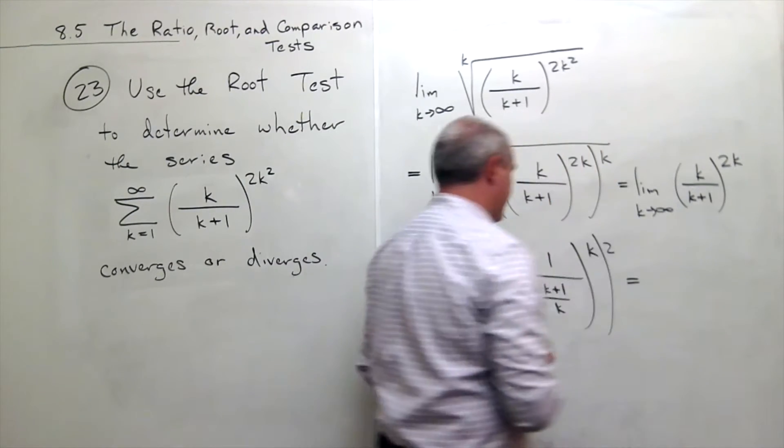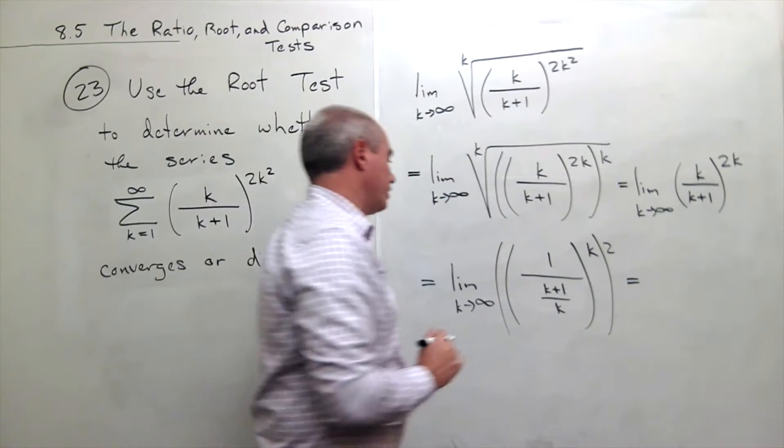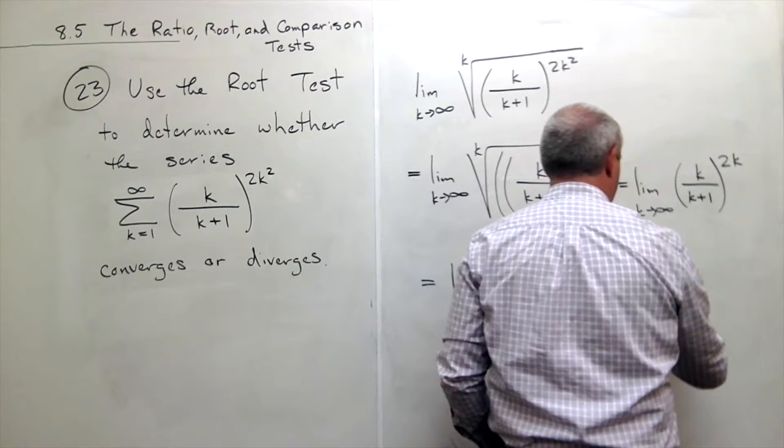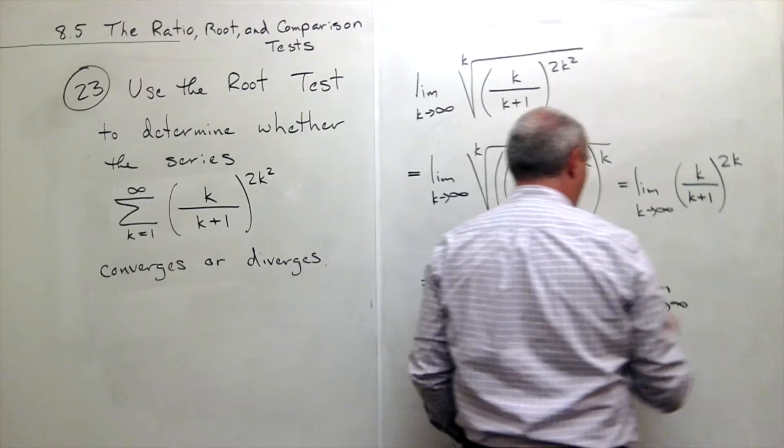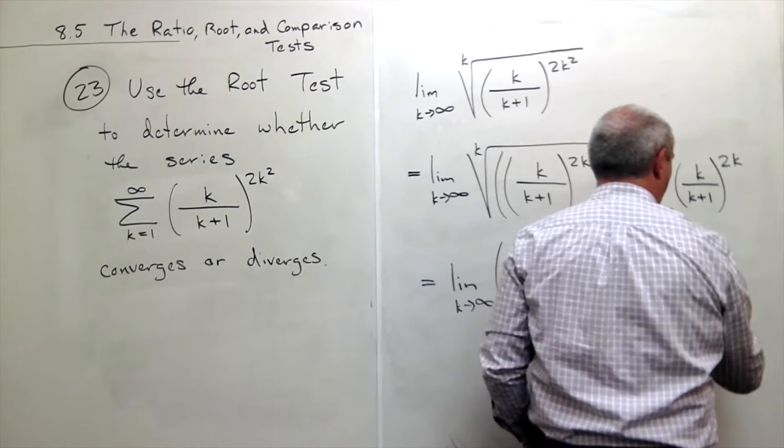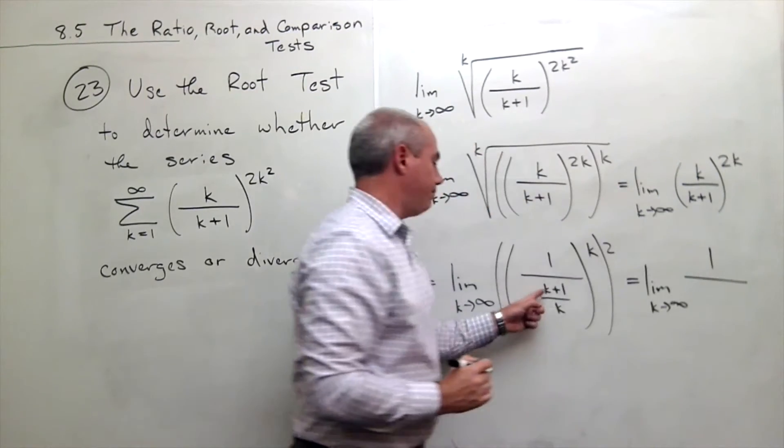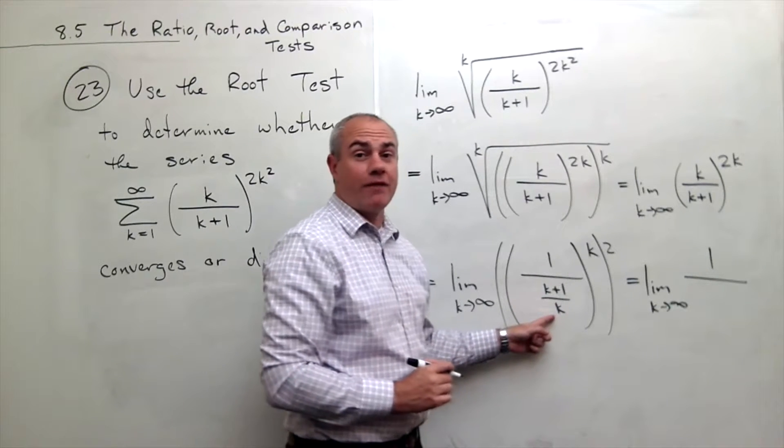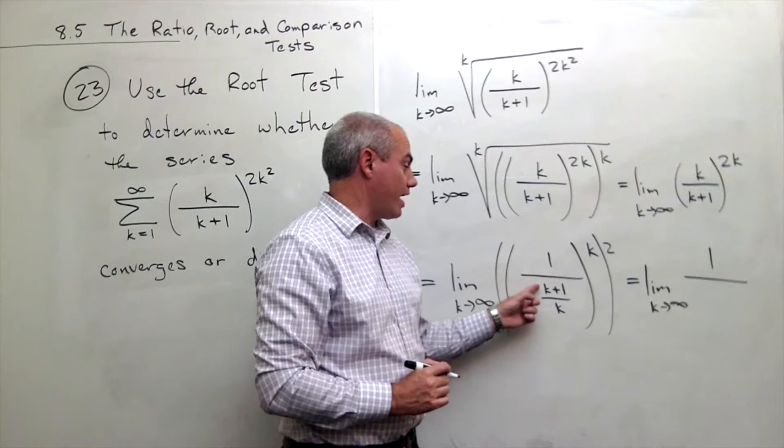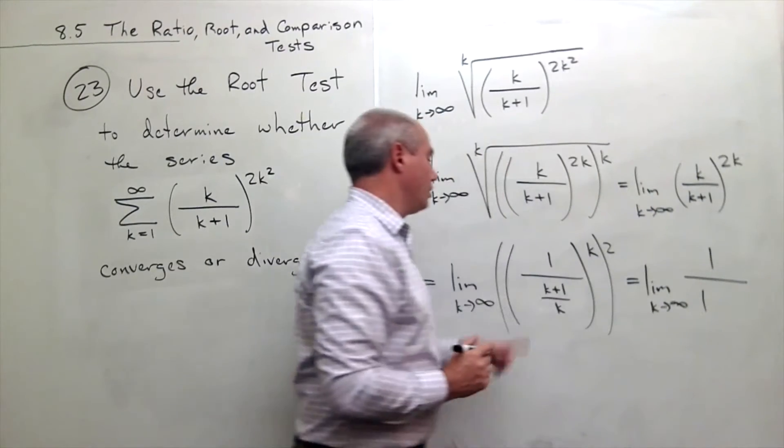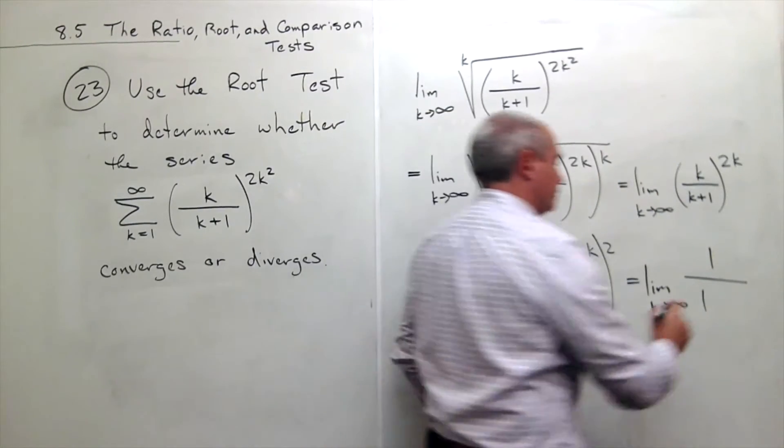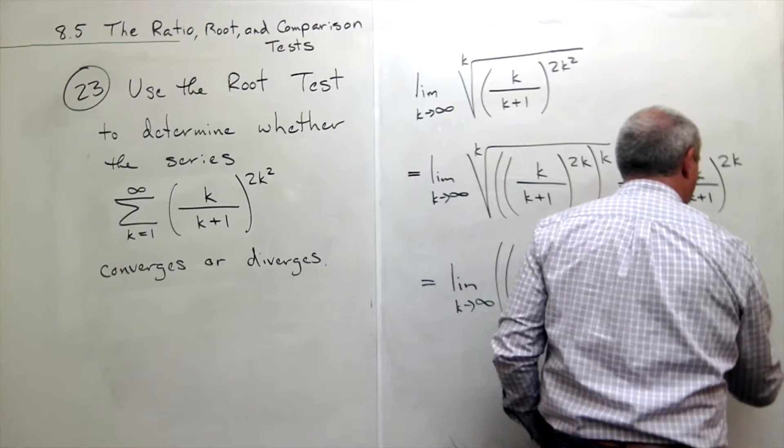I'm simplifying this down. I've got the limit as k goes to infinity of 1 over k plus 1 over k can be simplified down. k plus 1 over k is k over k, which is 1, plus 1 over k.